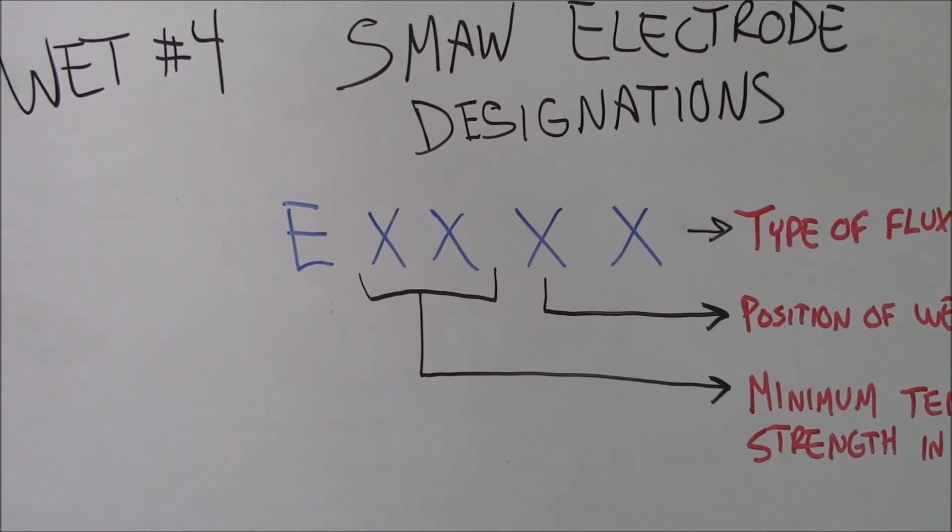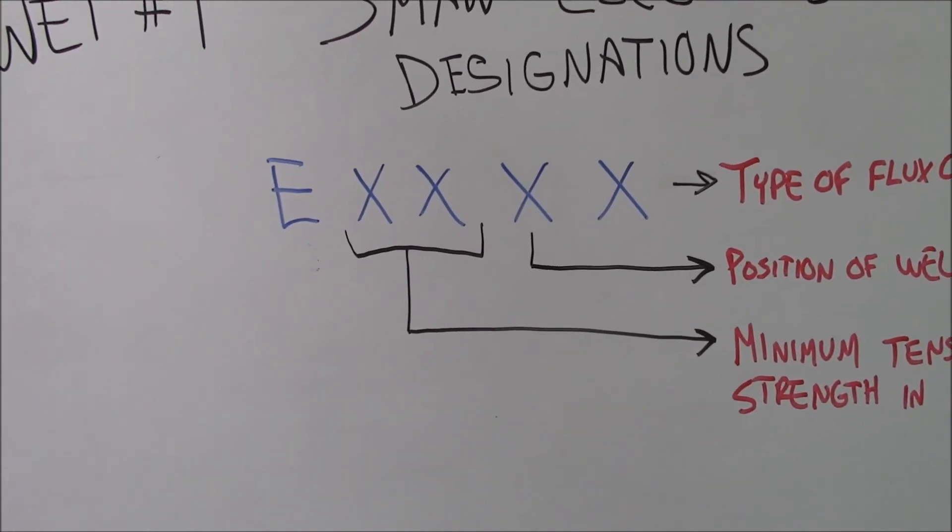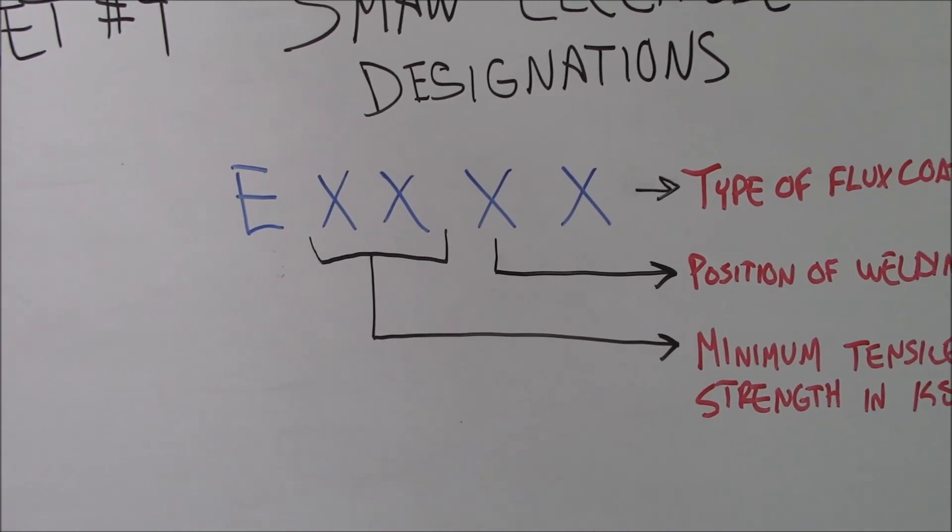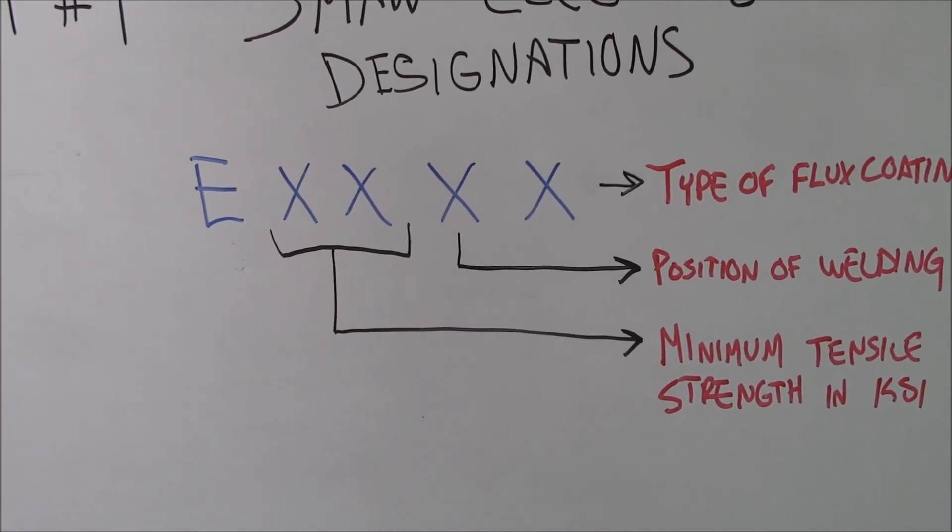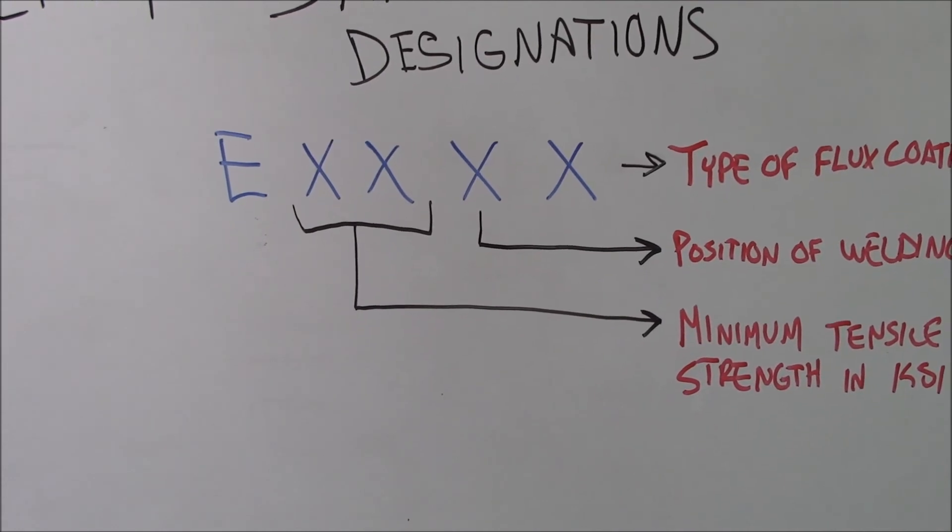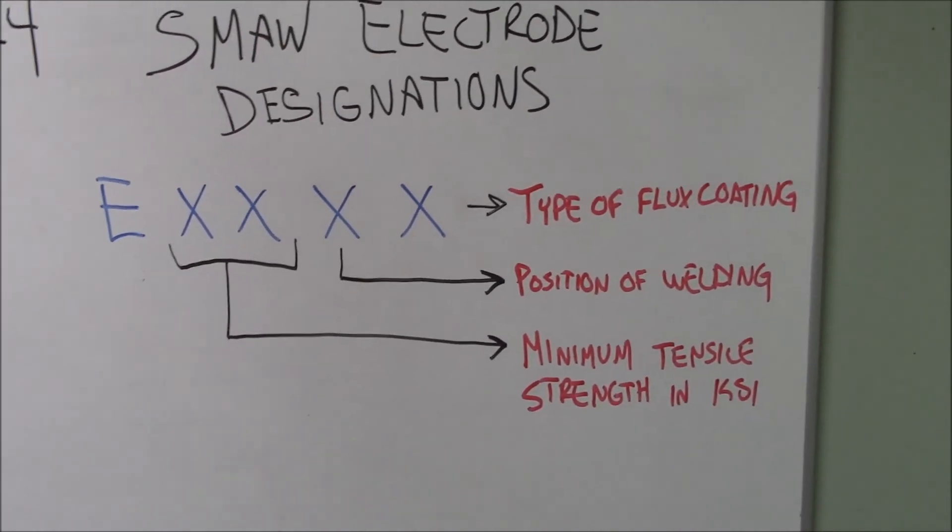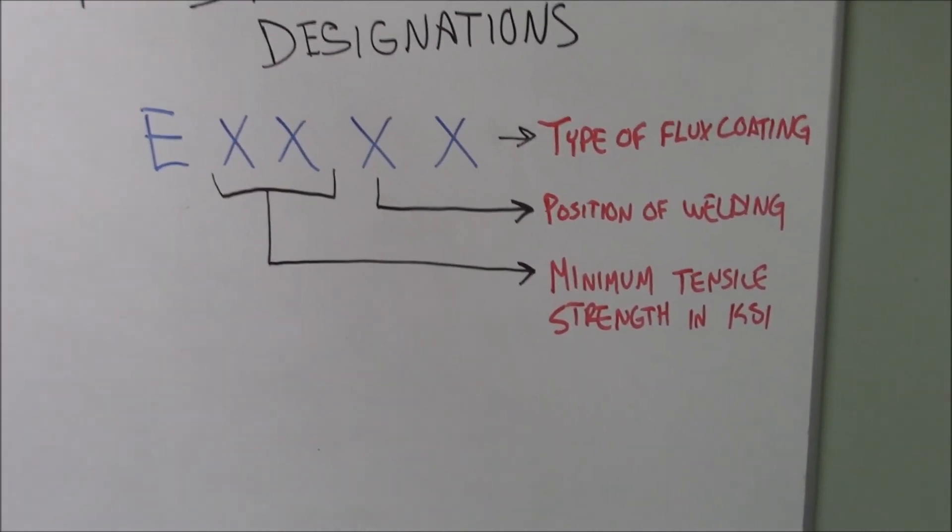And then, like I say, if there's a third X there, it's when you get into some lower alloy and higher strength. You get 100,000 PSI, 110, 120. That just goes up in expense.